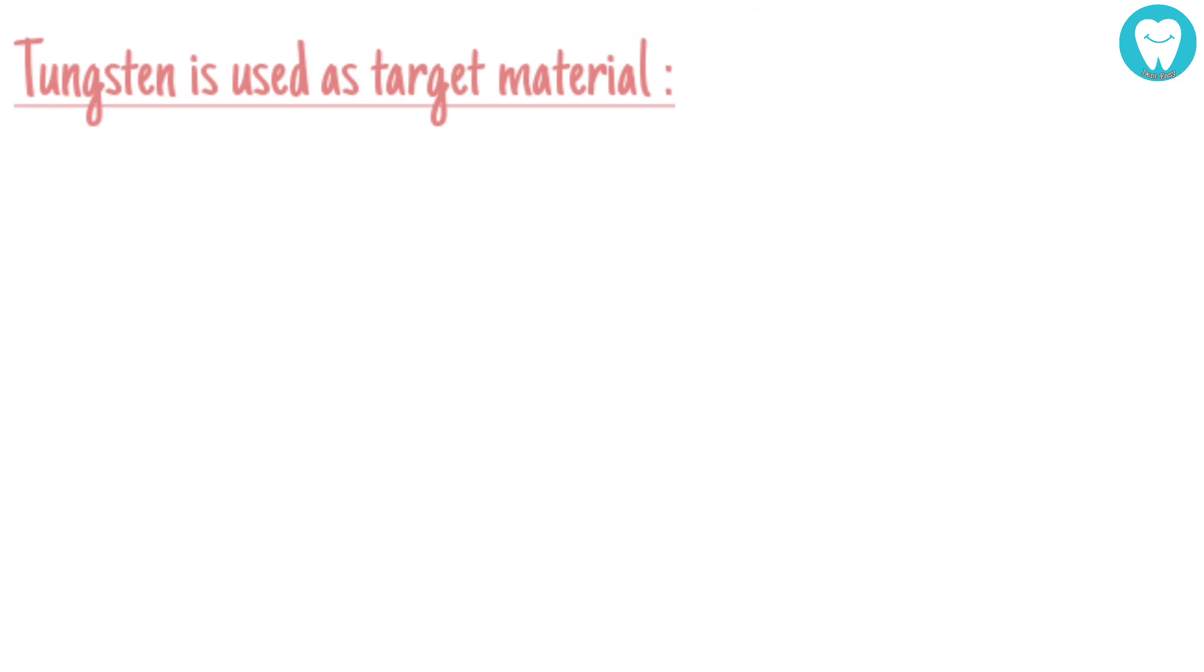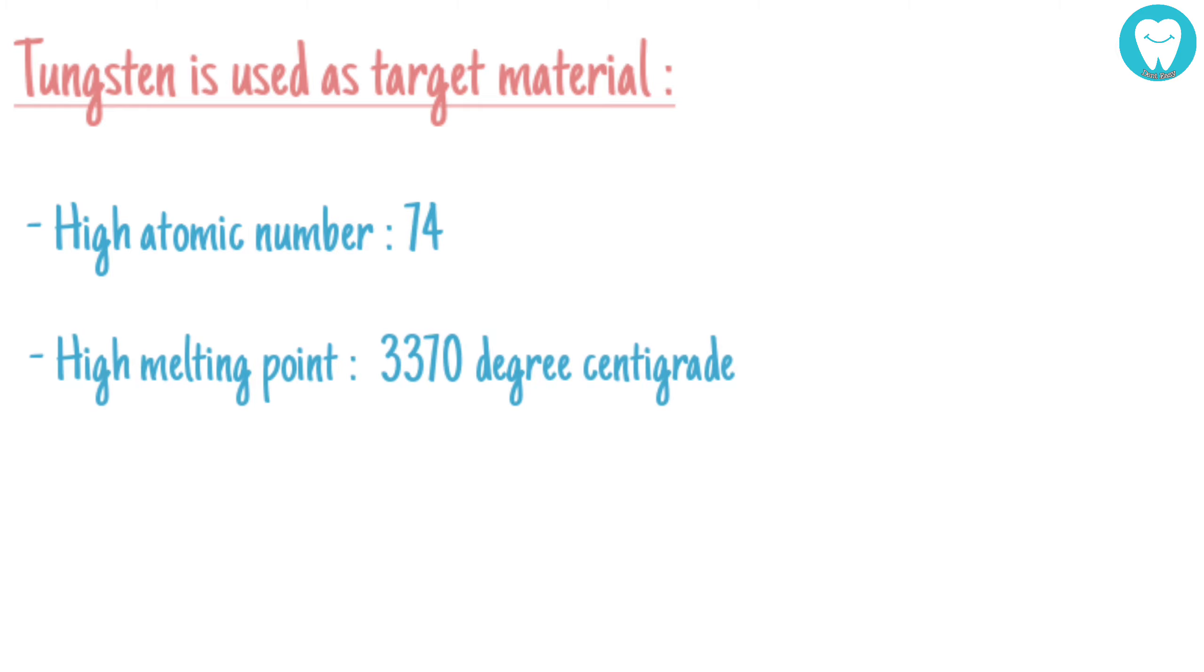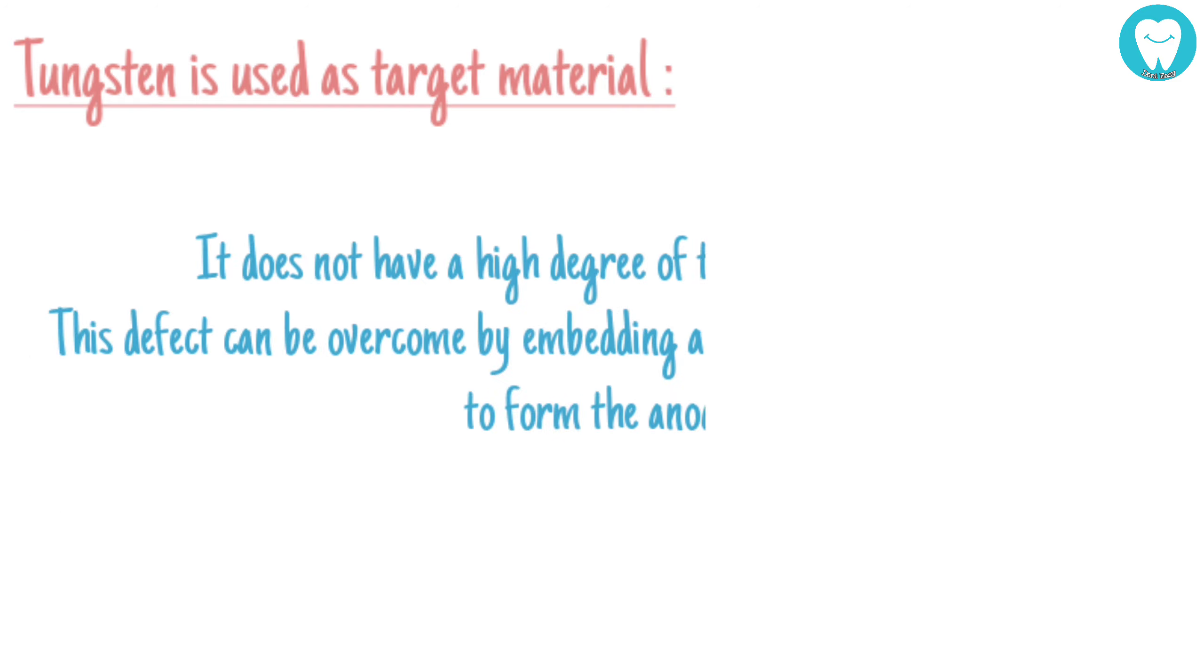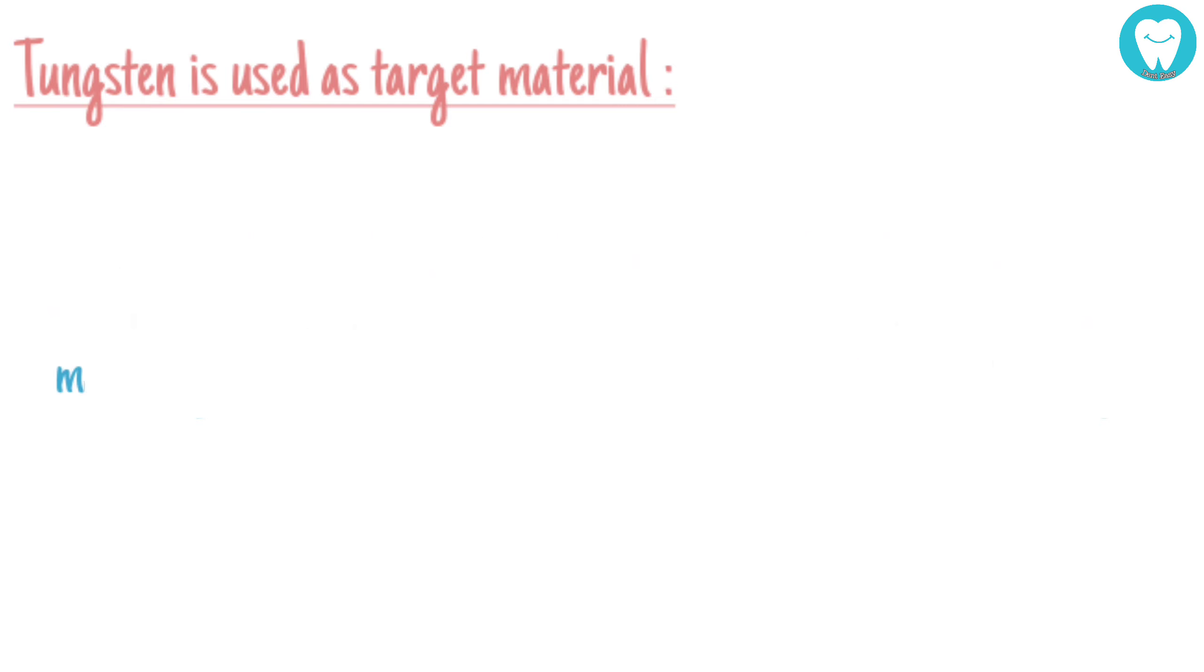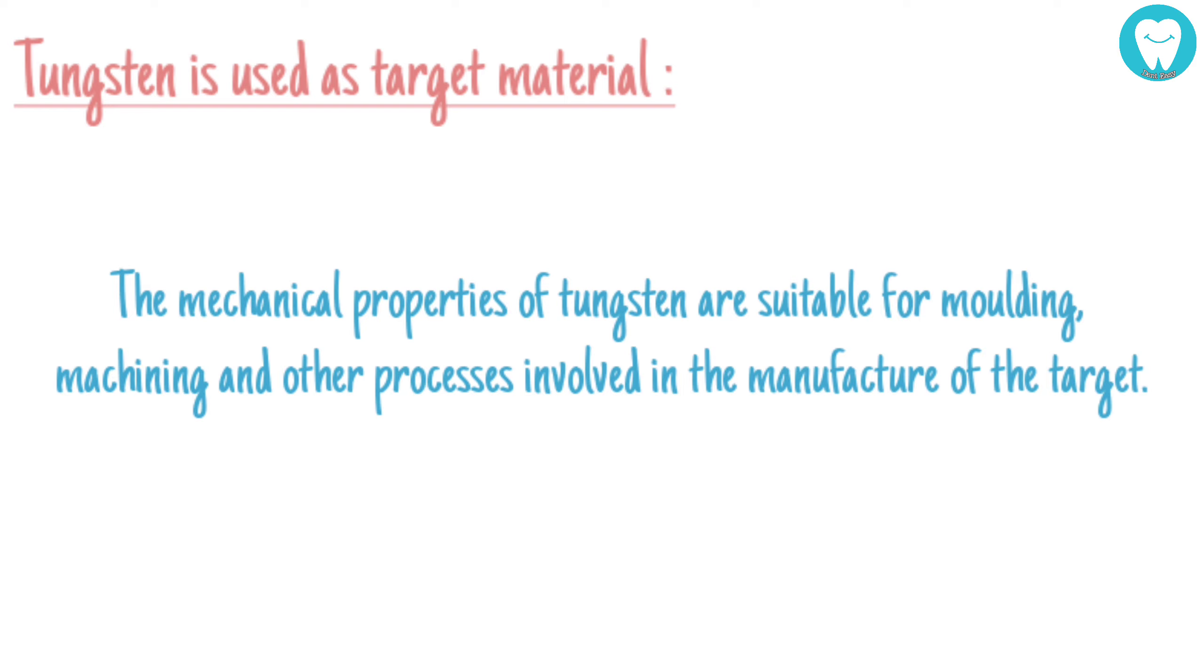Tungsten is used as target material as it has a high atomic number of 74, high melting point of 3370 degrees Celsius, and has low vapor pressure at high temperature. It does not have a high degree of thermal conductivity. This defect can be overcome by embedding a thin button in a copper stem to form the anode. The mechanical properties of tungsten are suitable for molding, machining, and other processes involved in the manufacture of the target.